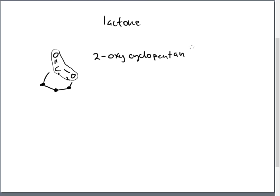What are we going to add on to the end of this name? This is a lactone — lactones end in '-one,' and so these names end in '-one.' There you go: 2-oxycyclopentanone is going to be the IUPAC name for this structure.